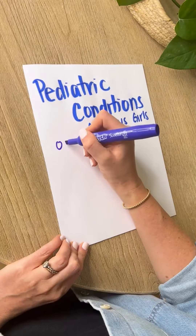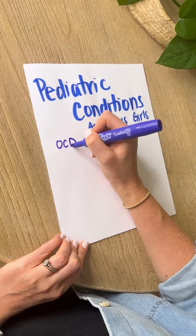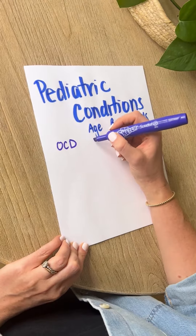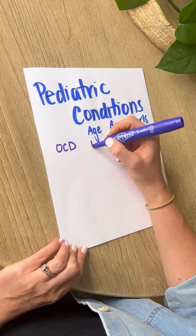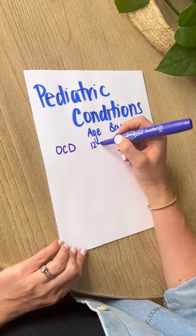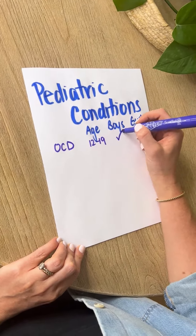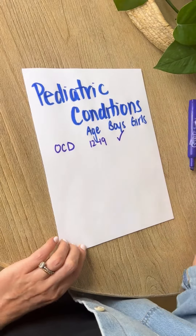Starting with osteochondritis dissecans. The age that this most commonly occurs is between 12 and 19 years old and it's more common in boys.